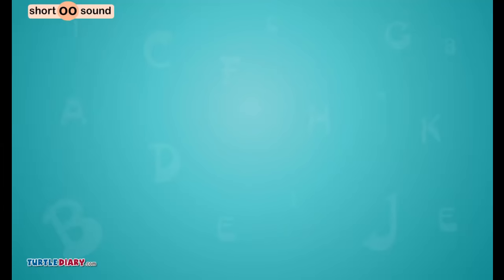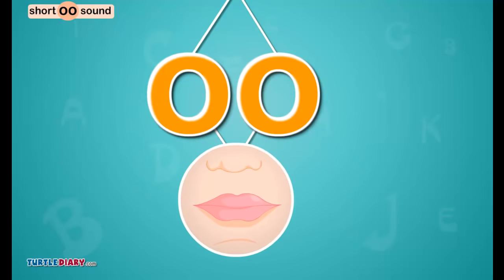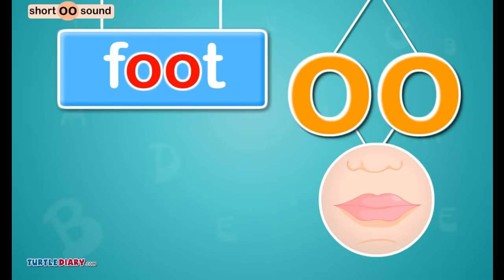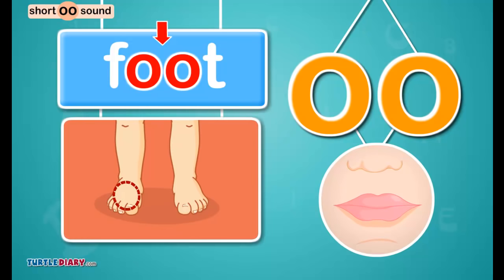Let us look at some more words that begin with the letters O-O and make the ʊ sound, as in hook. Click on the letter that makes the ʊ sound. Foot.